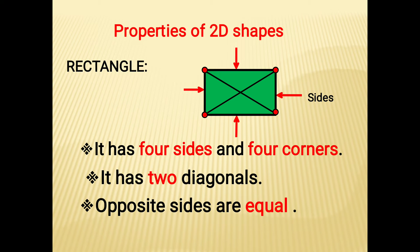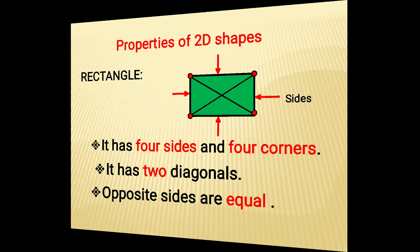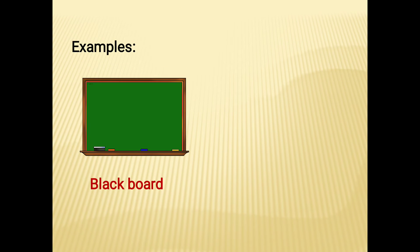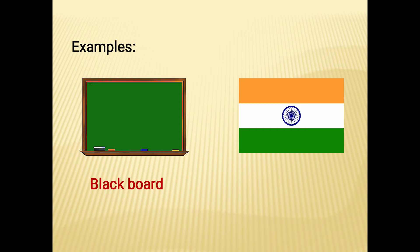Comparing the square and rectangle: both have four sides, four corners, and two diagonals. However, they differ in one property — in a square all sides are equal, while in a rectangle only opposite sides are equal. Examples of a rectangle are a blackboard and a flag.